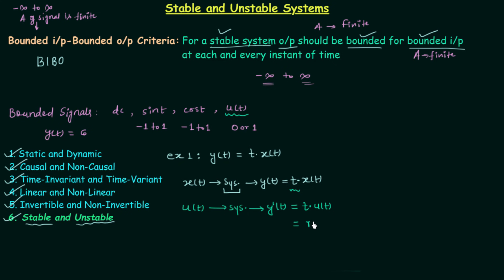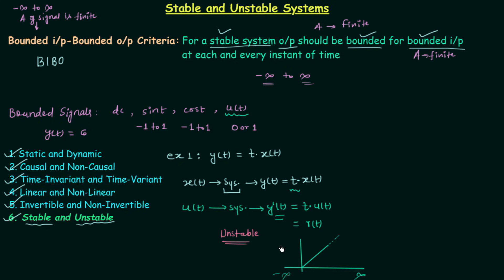The system will multiply t by the input u(t), so the output is t·u(t), which is the unit ramp signal. If you plot the waveform of the unit ramp signal, on increasing the time to infinity, the amplitude will also reach infinity. So we do not have a finite amplitude from minus infinity to infinity — therefore it is not a bounded signal. The output is unbounded, while the input u(t) was bounded. So for bounded input the output is unbounded, and therefore the system is unstable.